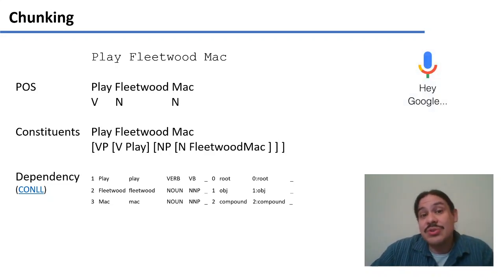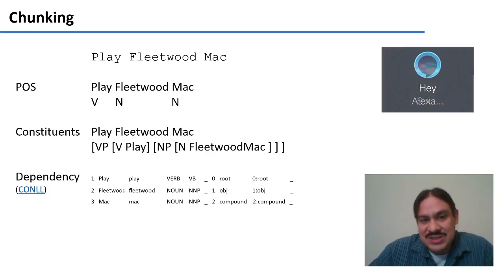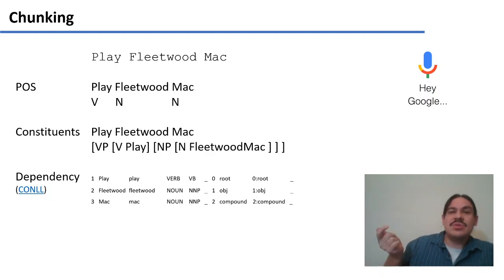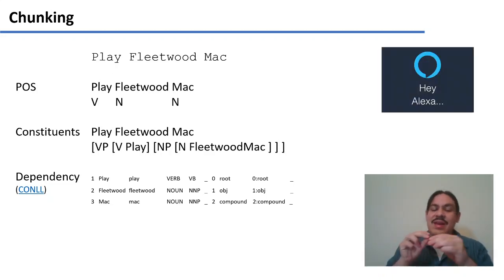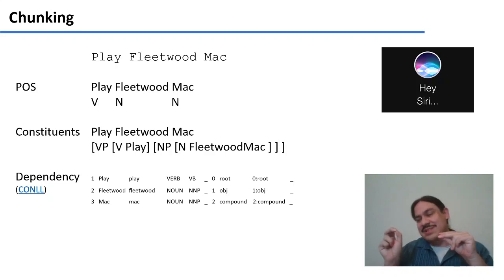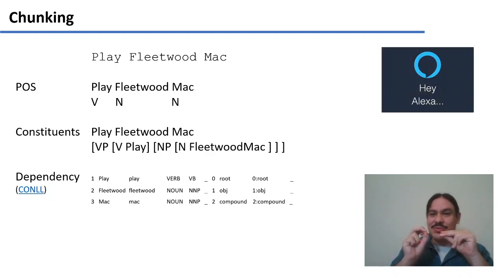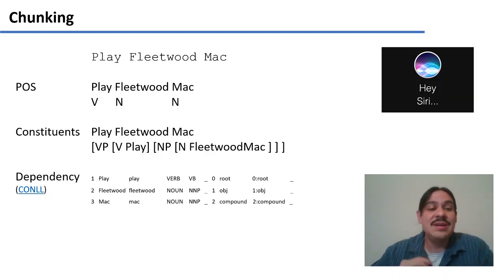We would also do this with a dependency parse, where the word play is the root, because verbs are the roots in dependency parses in English. That's the action. Then it would draw an arc of direct object relationship to Fleetwood, and an arc toward a compound-related word, Mac. This format for dependencies is called CoNLL, and there's a link if you want more information about it.